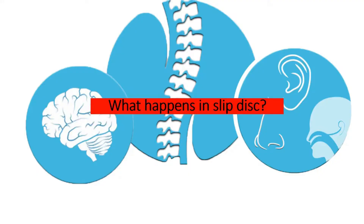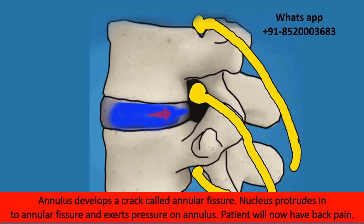So what happens in a slipped disc? The annulus develops a crack called an annular fissure, and the nucleus protrudes into the annular fissure and exerts pressure on it. Because of this crack, the patient will have back pain.